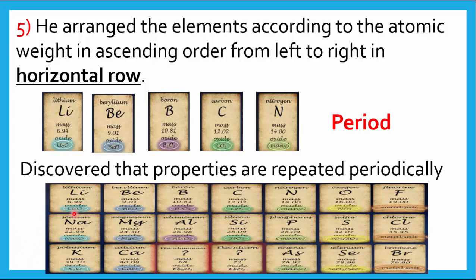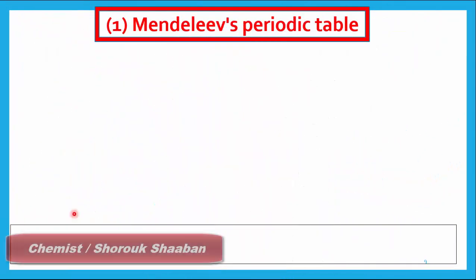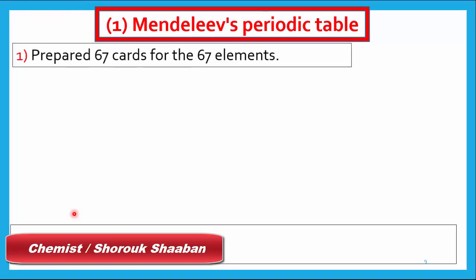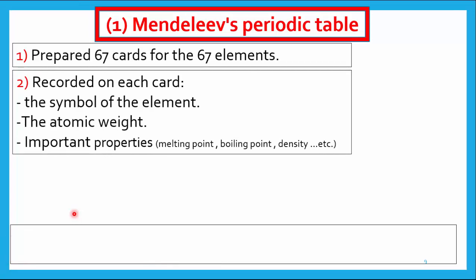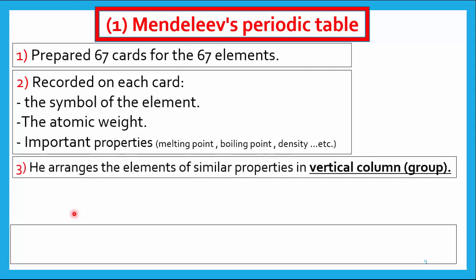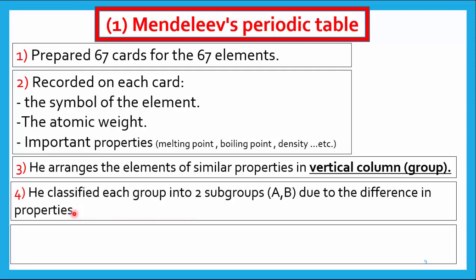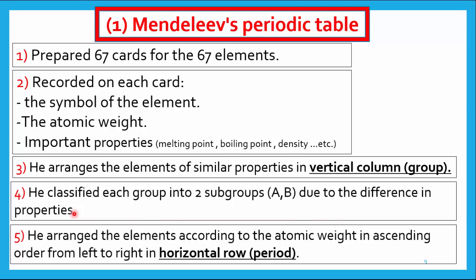Those were all the steps Mendeleev took to classify the elements in his table. To summarize: number one, he made 67 cards; number two, he wrote details — symbol, atomic weight, and important properties like melting point and boiling point; number three, he arranged elements of similar properties in a vertical column called a group; number four, he classified each group into two subgroups A and B; and number five, he arranged elements according to atomic weight in a horizontal row called a period.